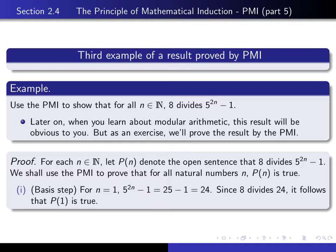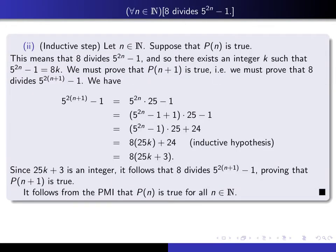Now we come to the inductive step. In the inductive step, we give ourselves a generic n in the natural numbers, and we assume that P(n) is true. And then we have to deduce from that that P(n+1) is true. So what does it mean to say that P(n) is true? It means that 8 divides 5 to the 2n minus 1.